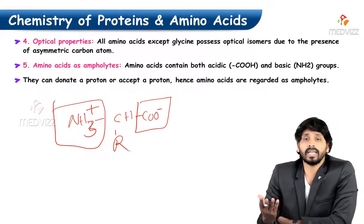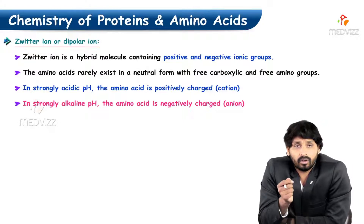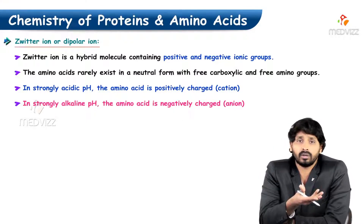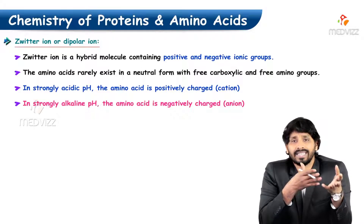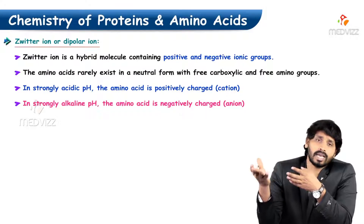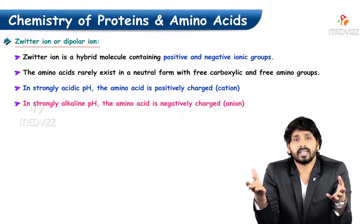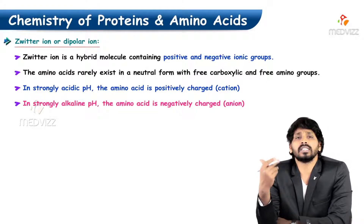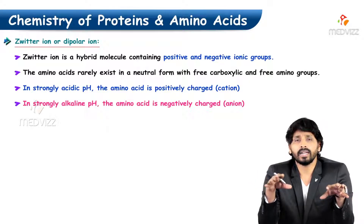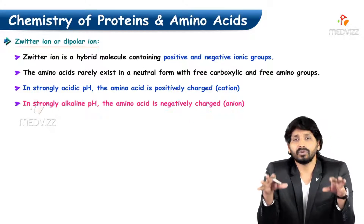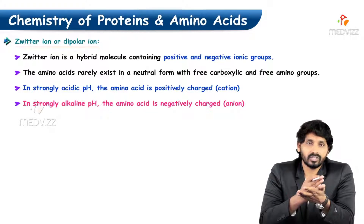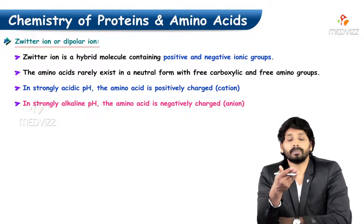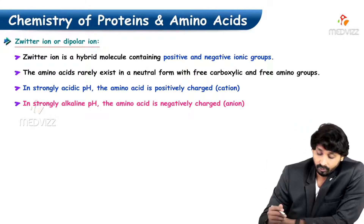Now, zwitterion — what is a zwitterion or dipolar ion? A zwitterion is a hybrid molecule which contains both positive and negative ionic groups. As just discussed, the amino group carries NH3+ (positive charge) and the carboxyl group carries COO− (negative charge). Amino acids can exist as a zwitterion at a particular pH. At that pH, they carry both positive and negative charge. Generally they may act as anion or cation depending on the type of solution, but at a particular pH they exist as zwitterion. It is important to note that amino acids rarely exist in natural form with free carboxylic and free amino groups.